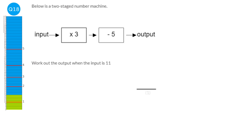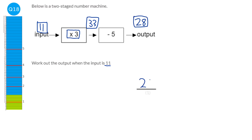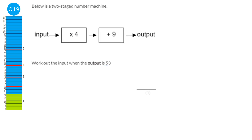We're going to use a function machine to find the output when the input is 11. We put 11 in and first multiply by 3, giving 33. Then we take away 5: 33 take away 5 is 28. So our output is 28. In the next part, we're given the output as 53 and need to work backwards. Going backwards we do the opposite — plus 9 becomes minus 9. 53 take away 9 is 44. We can check: 44 plus 9 is 53, so that works.